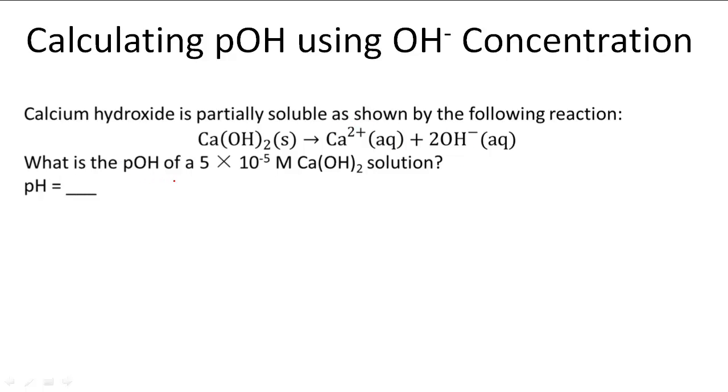What is the pOH of a 5 times 10 to the negative 5th power molar calcium hydroxide solution? pOH is equal to the negative log of the concentration of OH negative ion.